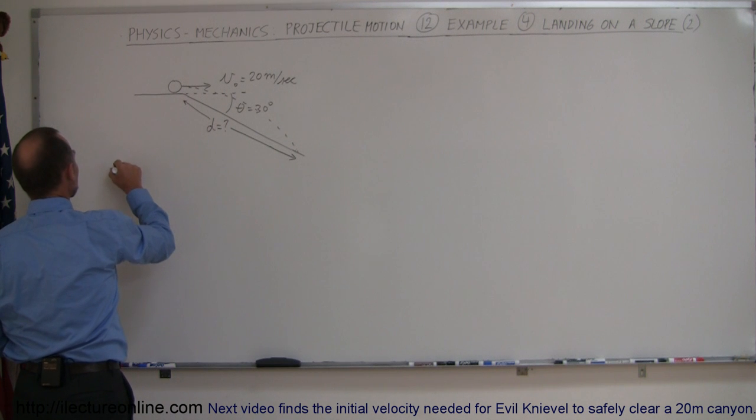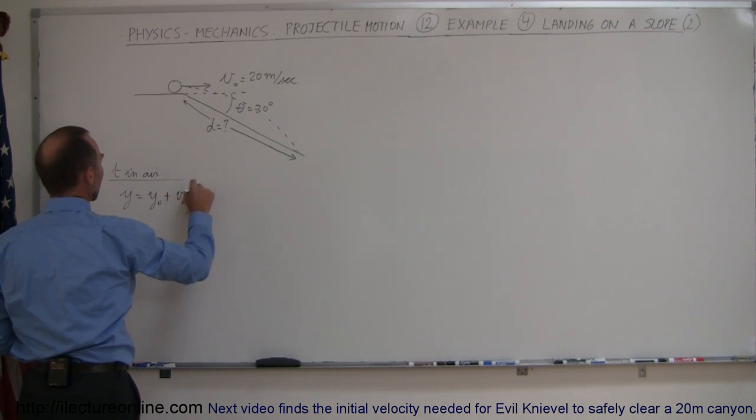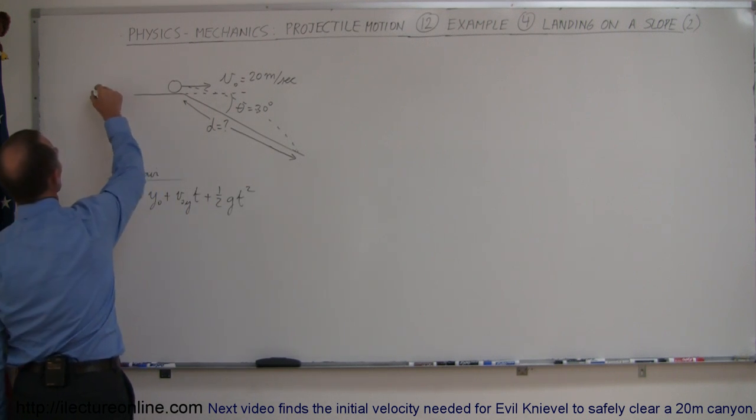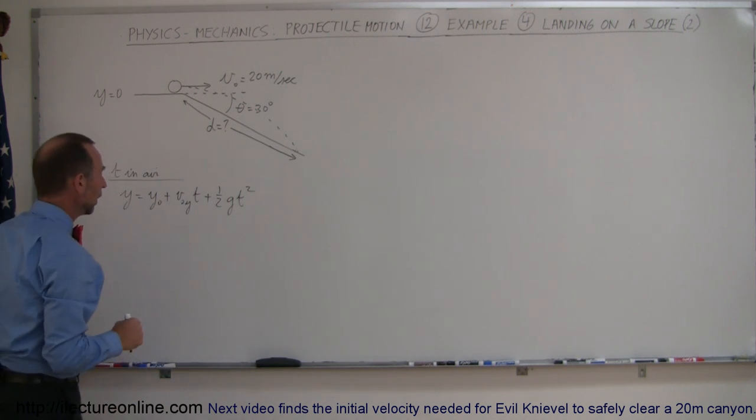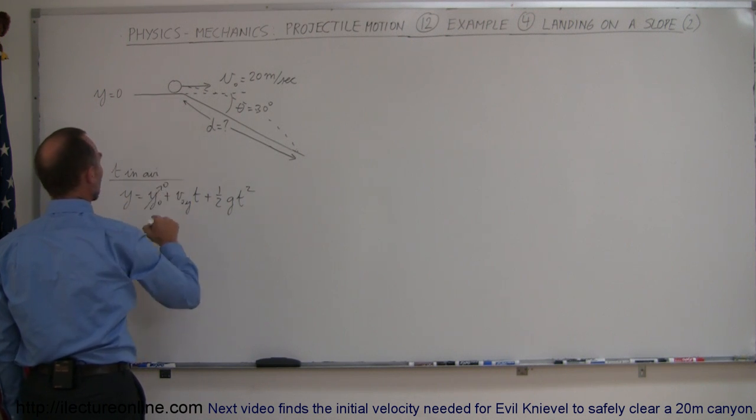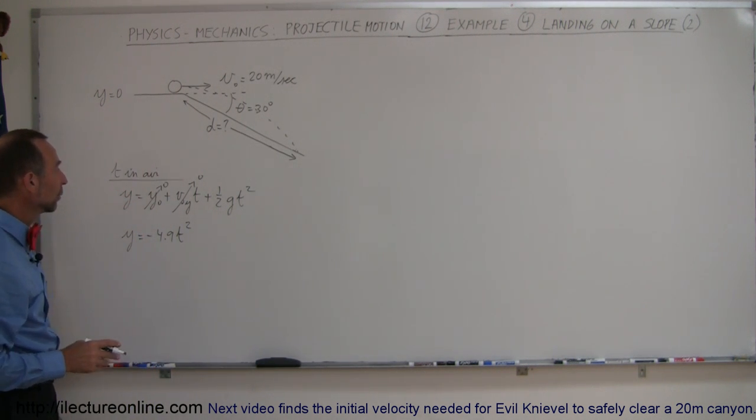So time in the air can be found using the equation y equals y sub-naught plus v sub-naught in the y direction times time plus one-half g t squared. If I consider this to be y equals zero height, you can see that y will be negative as it goes down the slope. We have initial height will be zero, the initial velocity in the y direction will be zero, and so it will land, so y is equal to minus 4.9 t squared, g of course being minus 4.9, giving us a negative y on the way down.